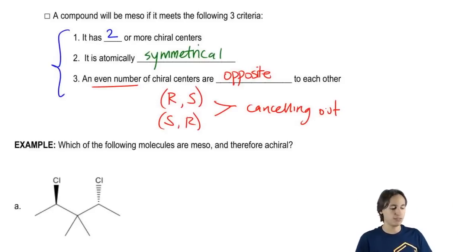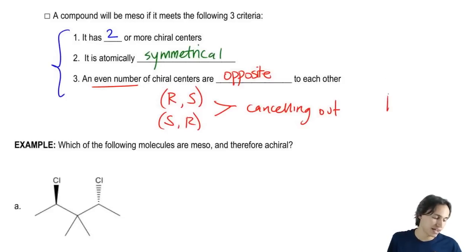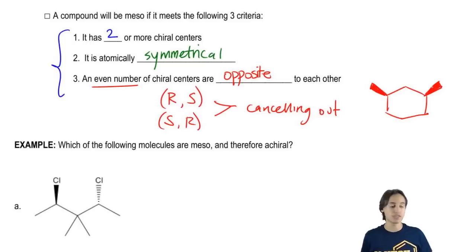So let me go ahead and give you a really simple version of a meso compound. Let's say that I had a cyclohexane and I had a wedge here and I had a wedge here. This is an example. There are lots of different meso compounds out there, but this is an example of a meso compound.